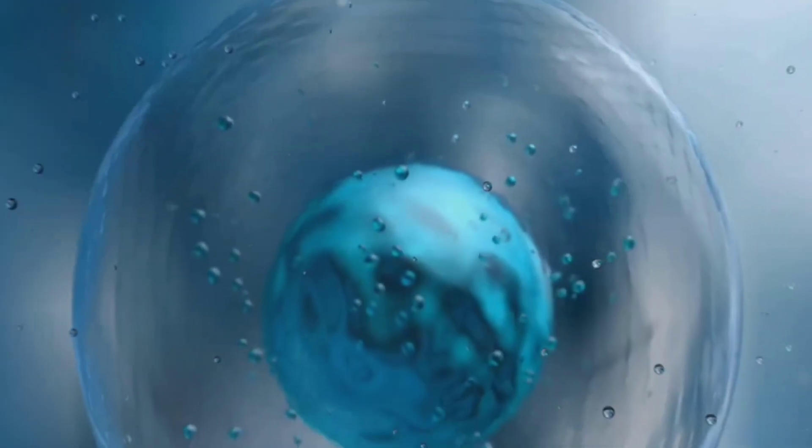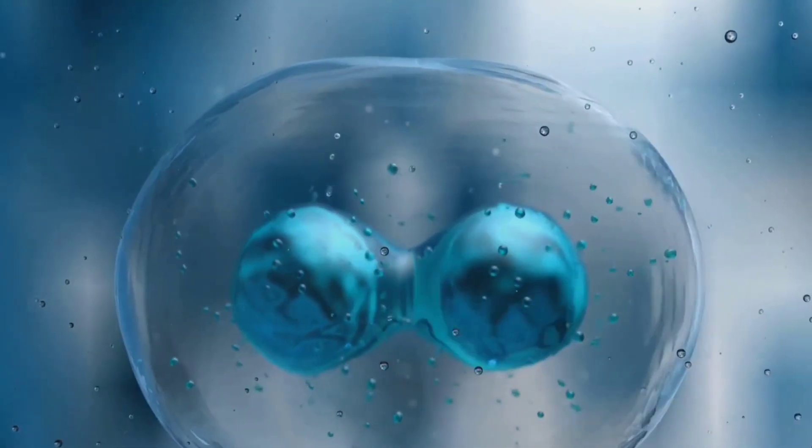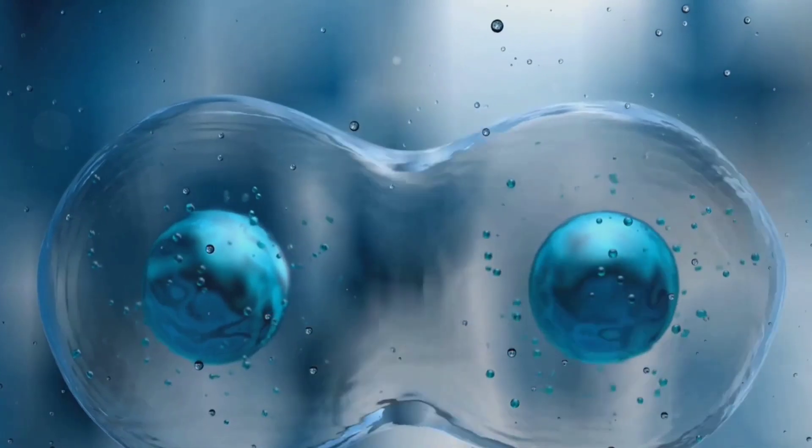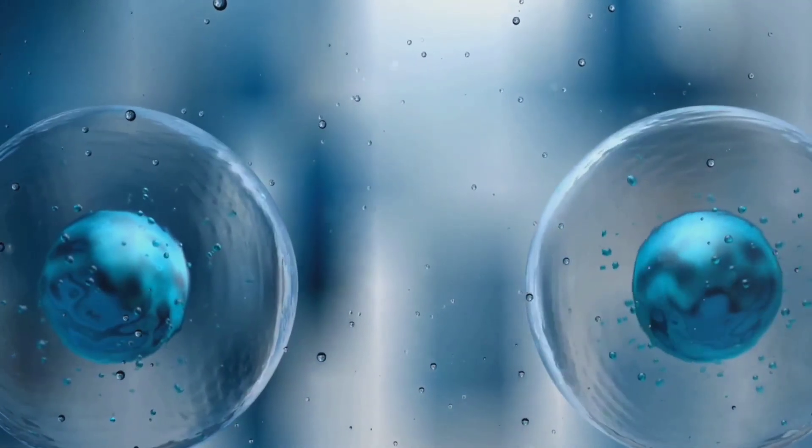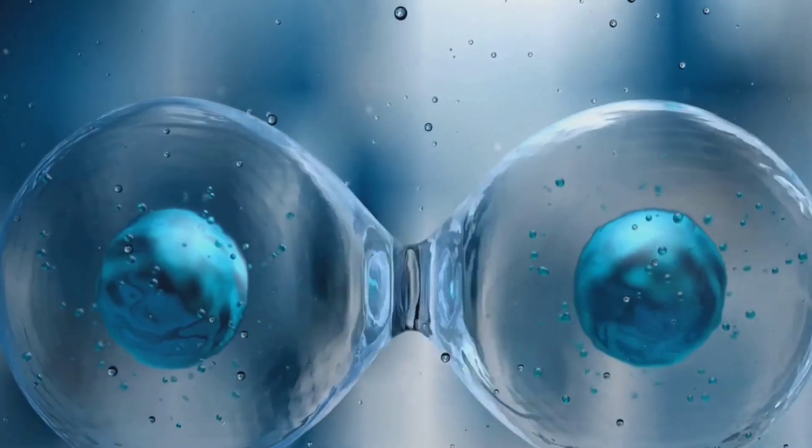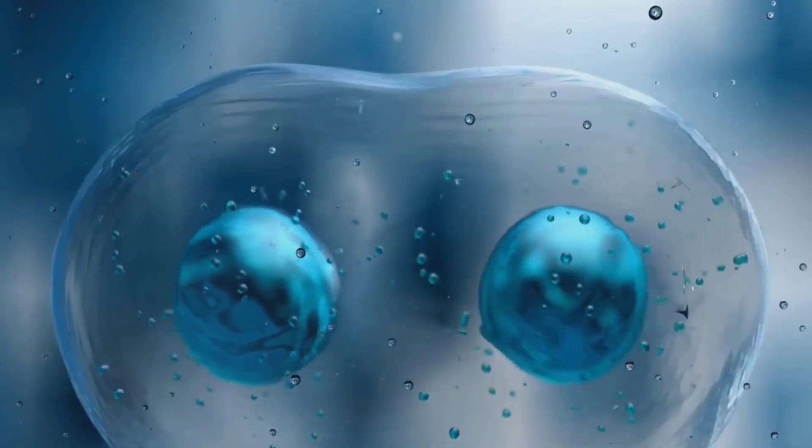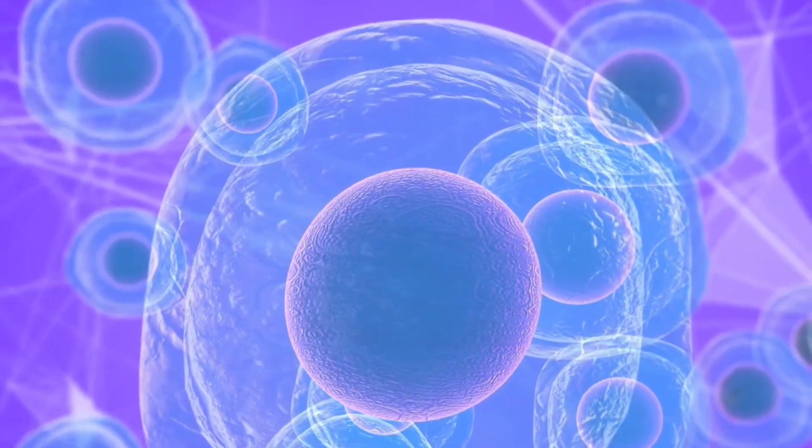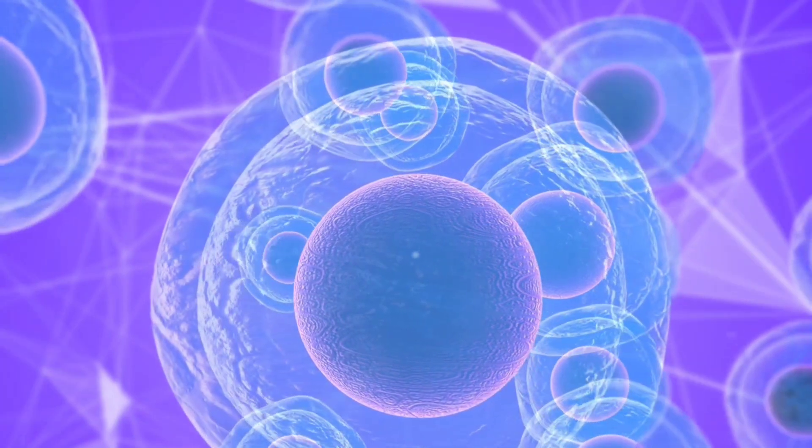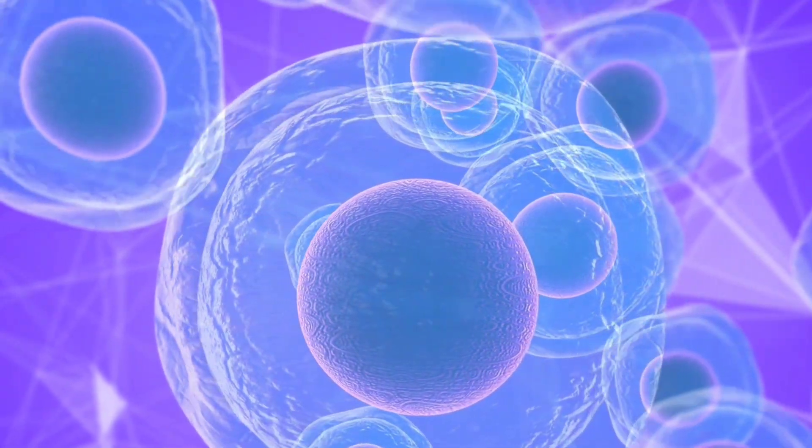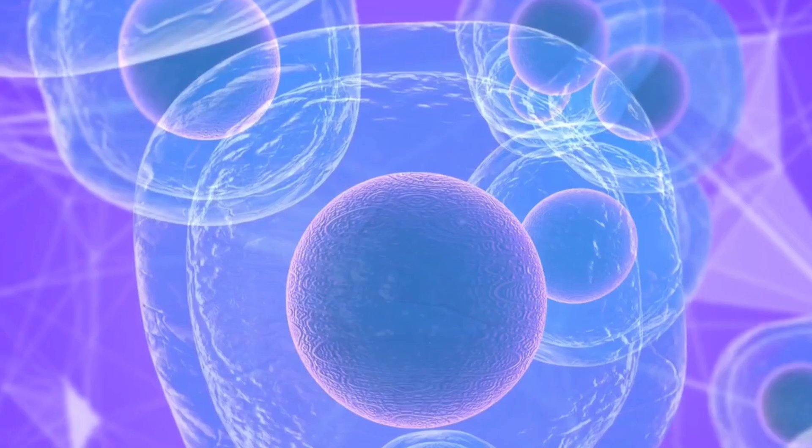One of the key tools in this field is the use of stem cells. These are unique cells in our body that have the ability to develop into many different types of cells. They can be thought of as a sort of cellular wild card able to become a heart cell, a liver cell, or even a neuron in the brain. By harnessing the power of stem cells, scientists hope to guide their development into specific types of cells needed to replace damaged or diseased organs.